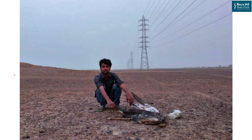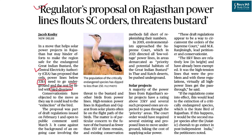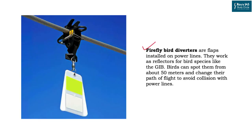The Supreme Court in 2019 directed all low voltage power lines to be demarcated as priority and potential habitats of the Great Indian Bustard. The government brought a proposal to install firefly bird diverters on the lines. These devices have reflectors that, when spotted by birds, cause them to change their flight path and avoid collision. The bird diverters are installed on the power lines and act as reflectors. Environmentalists say this will provide only partial relief, as some birds may not respond to the reflectors and could still be killed.